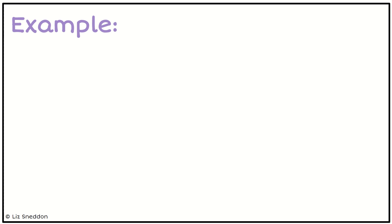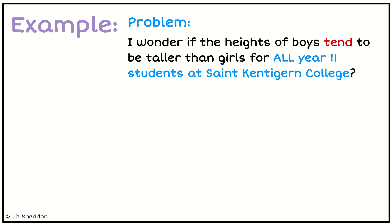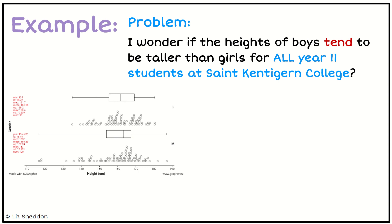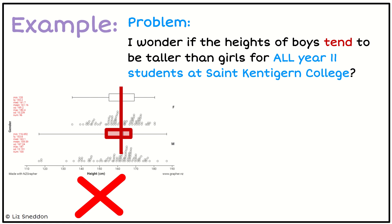Let's have a look at an example. The question is: do the heights of boys tend to be taller than girls for all year 11 students at St. Kennekin College? That's our population. Here is a graph of the sample data and we're going to use it to make an inference about the population. Using the median rule, I've drawn a line through the median of the females group, and now drawing a box around the males — that median cuts through the box, so with that scenario I couldn't make the call.